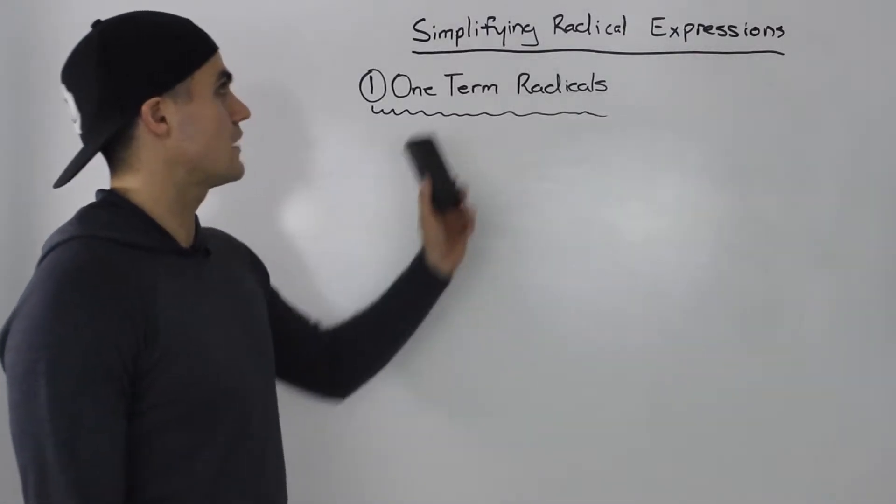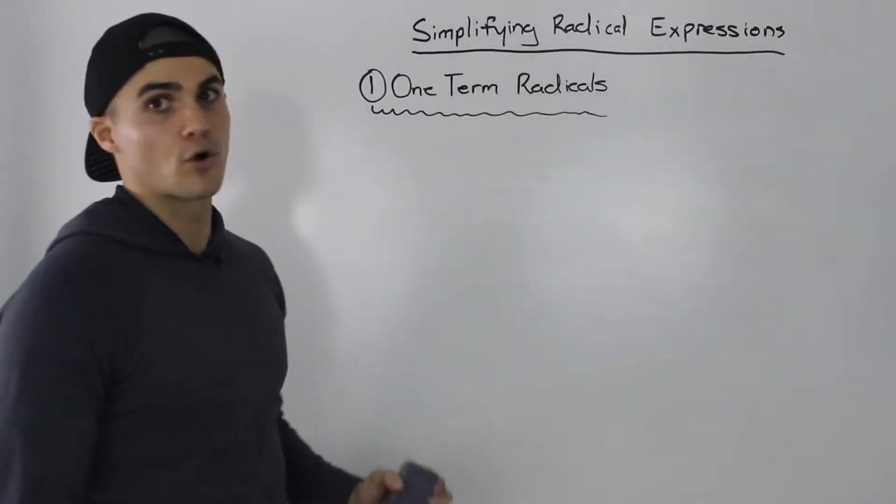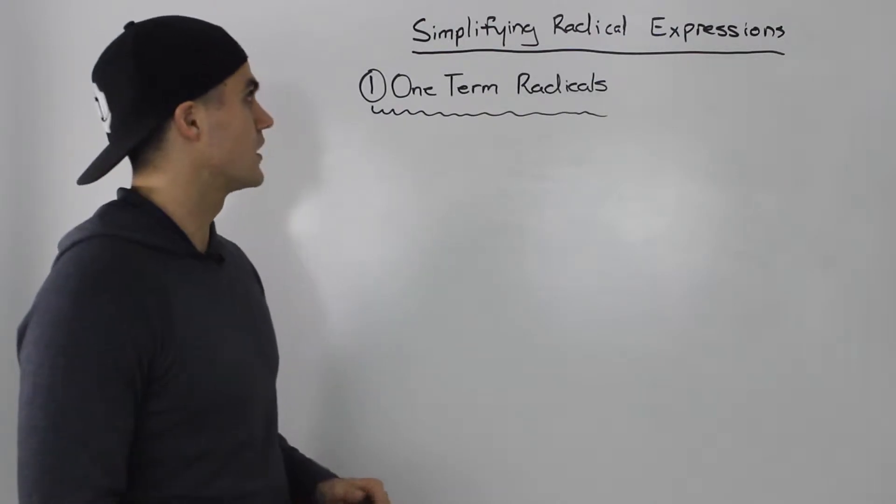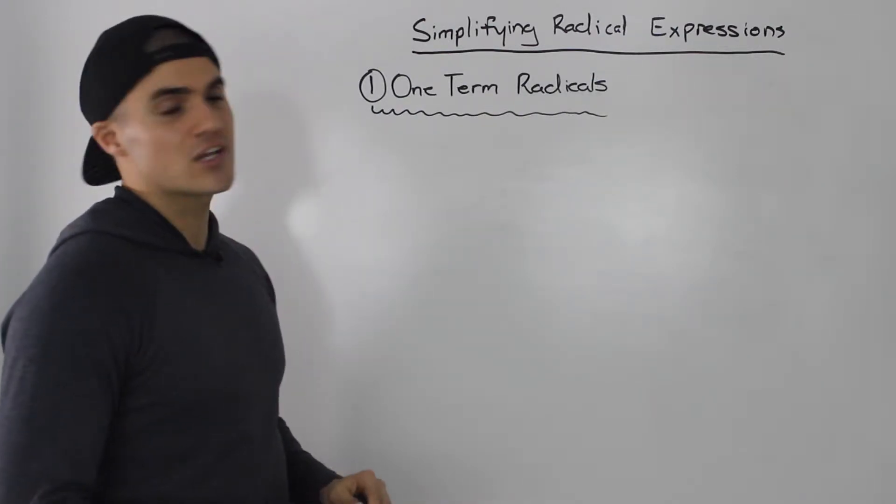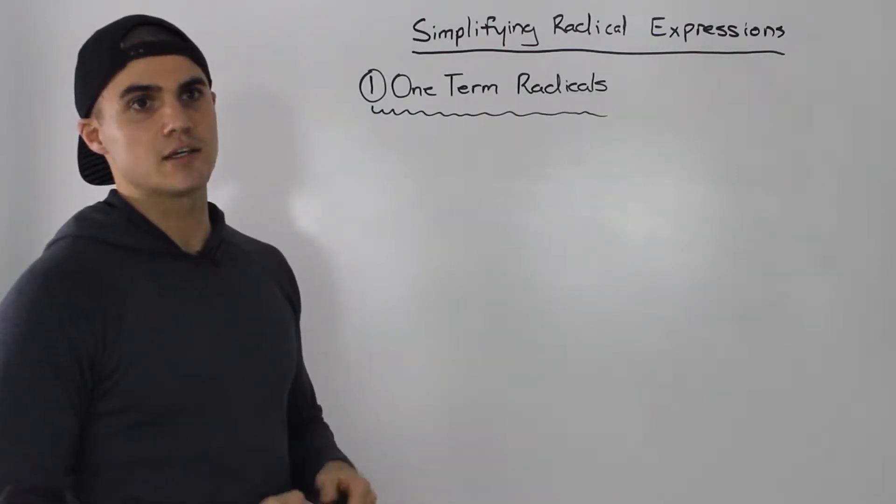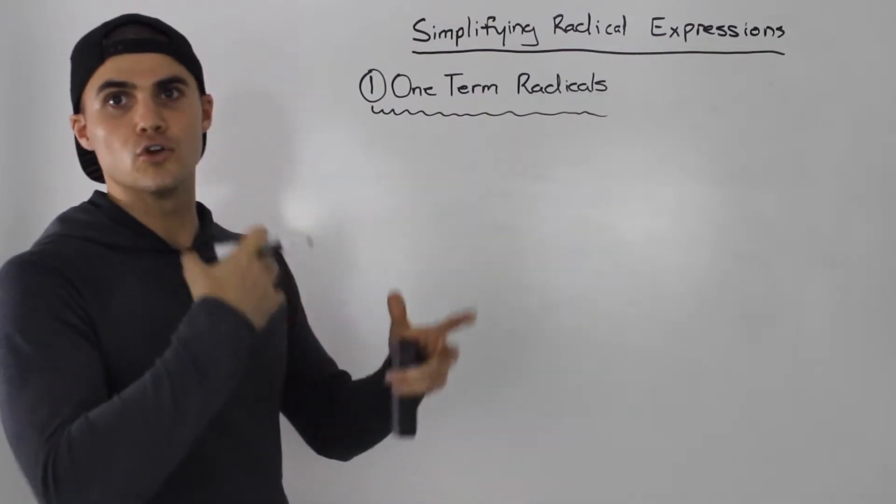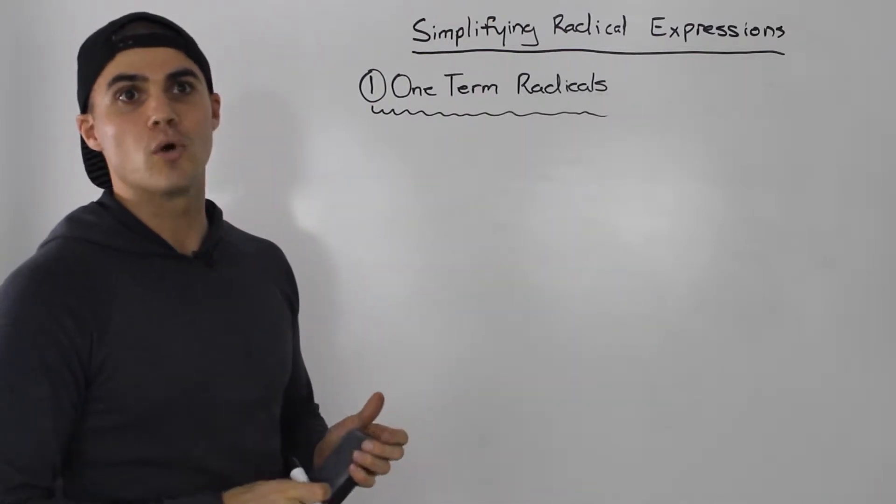Let's talk about simplifying radical expressions or rationalizing expressions. Rationalizing expression means basically when you have a radical in either the numerator or denominator and you want to get rid of it.